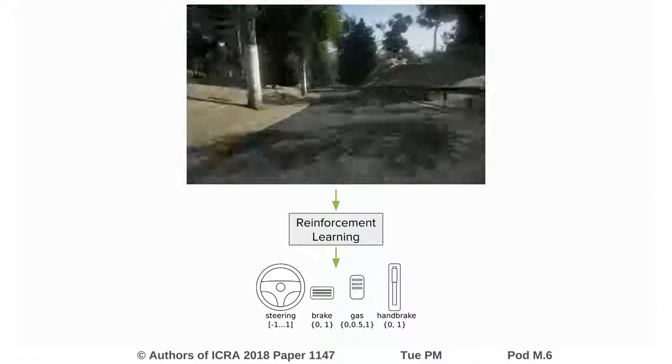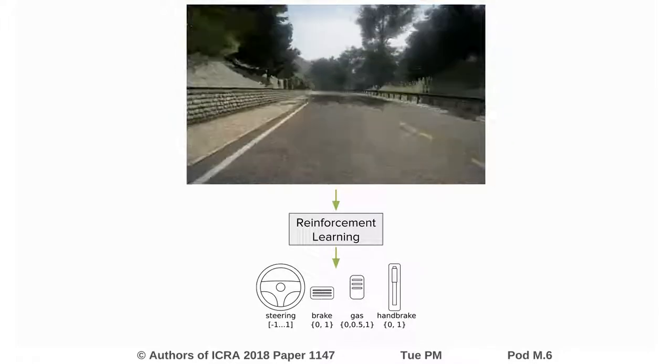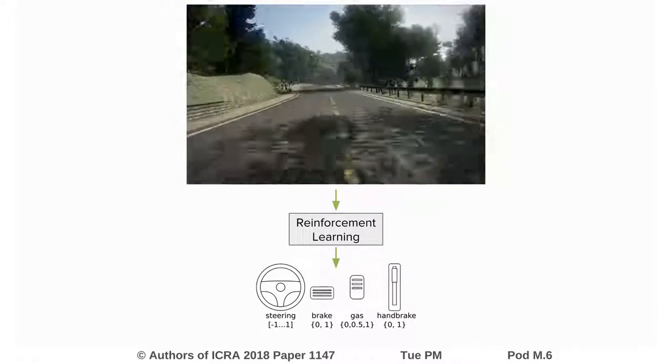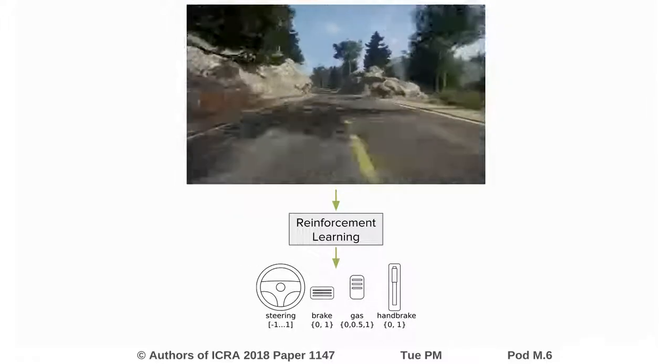Our network is trained in a realistic racing game and unlike prior works, learns full control, even handbrake for drifting. The task is challenging as visual features and complex car dynamics have to be learned.